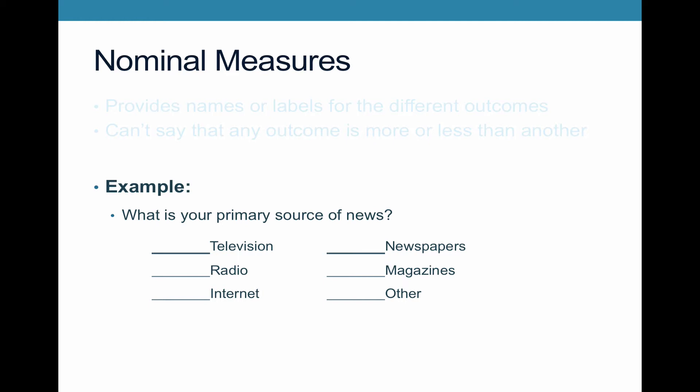Another example would be to ask somebody what religion they are. Somebody could say they're Christian, they're Jewish, they're Muslim. One's not more religious than another — they're just different types. So this is a nominal measure, meaning that you're giving different names for the outcomes.